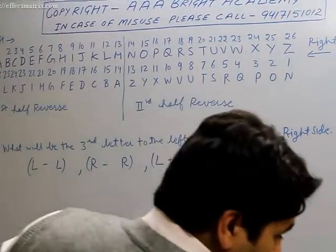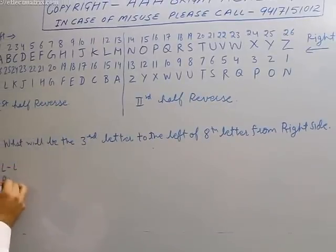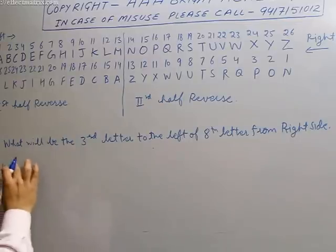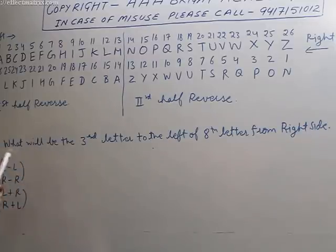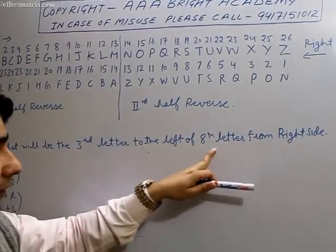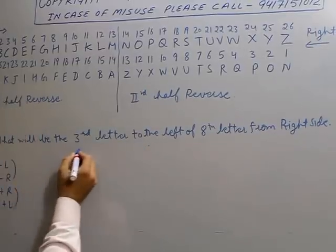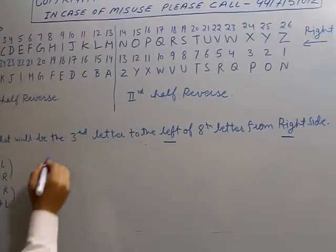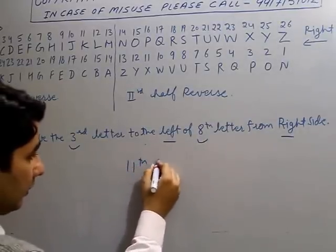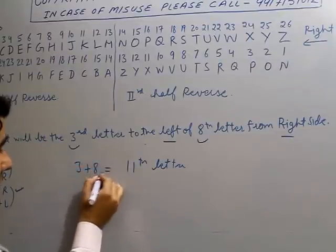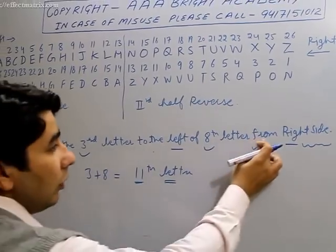The question shown here is: what will be the third letter to the left of the eighth letter from the right side? One side is left and one side is right, so one position is third and one is eighth. Since it is left and right, we add: 3 plus 8 equals 11. That means you have to find out the eleventh letter from the right side. The 11th letter from the right side is P. So P is the correct answer.